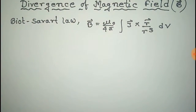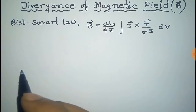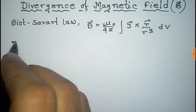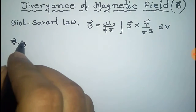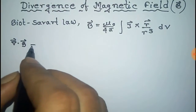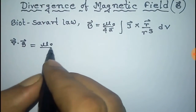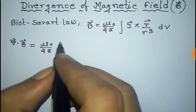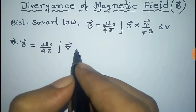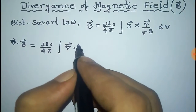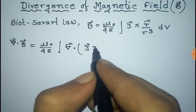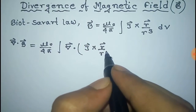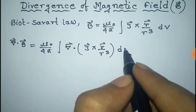Here, j is the volume current density. Now, the divergence of B is equal to mu0 by 4 pi — which is a constant — into integration of divergence of j cross r by r cube into dV.